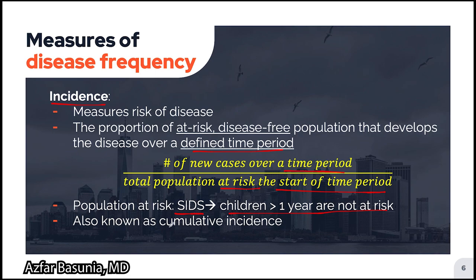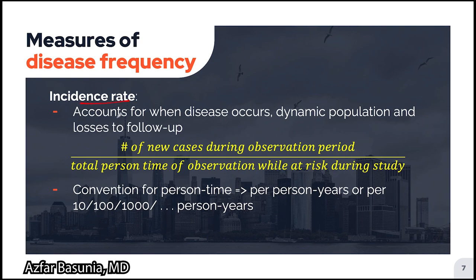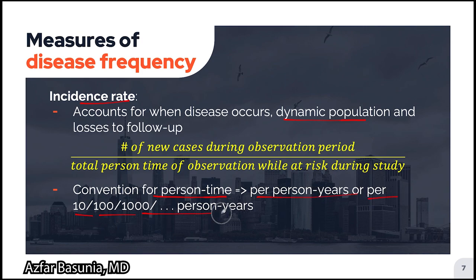For instance, if we are looking at sudden infant death syndrome or SIDS, children who are greater than one year old are not at risk because they are not considered infants. When we talk about incidence, it's also known as cumulative incidence. Another way of looking at incidence is through incidence rate, which accounts for when the disease occurs, a dynamic population — individuals moving in and out — as well as losses to follow-up. It is calculated by dividing the total number of new cases during the observation period by the total person-time of observation while at risk. The convention for expressing person-time is per person-years, 10, 100, or 1,000 person-years.